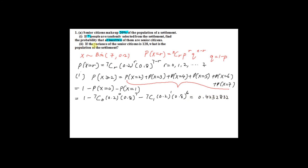For Part 2, if the variance of the senior citizens is equal to 1, we can find N — the population of the settlement. Using the variance formula for binomial: N × p × q = 1, so N = 1 divided by (0.2 × 0.8) = 1 / 0.16, giving N equal to 128 divided by 0.2 multiplied by 0.8, which equals 800.